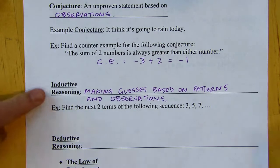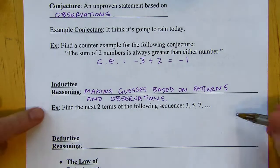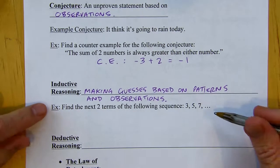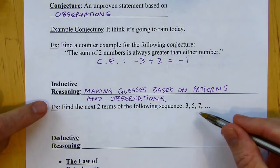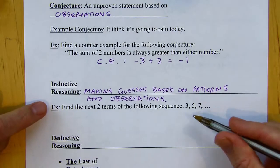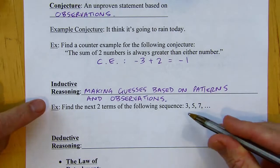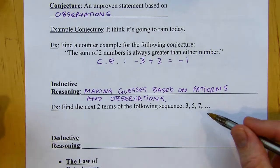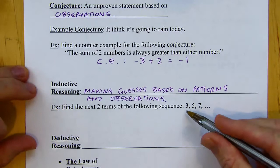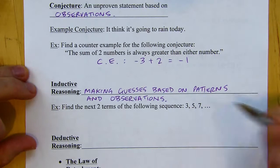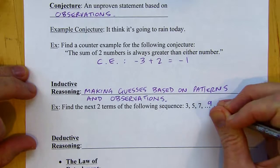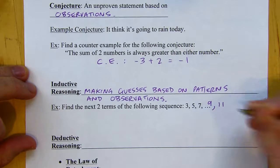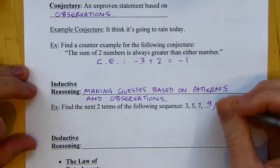Looking at an example: find the next two terms of the following sequence — three, five, seven. It looks like odd counting numbers, so odd integers. Three, five, seven — I would guess that nine and eleven would come next. I think most people would guess that.